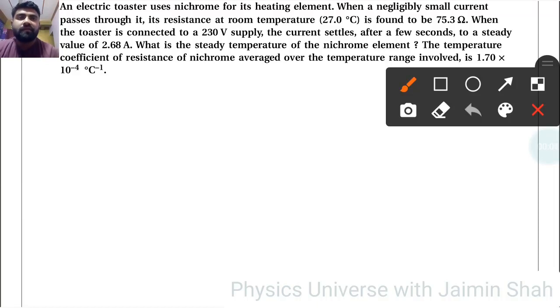An electric toaster uses nichrome for its heating element. When a negligibly small current passes through it, its resistance at room temperature 27°C is found to be 75.3Ω.